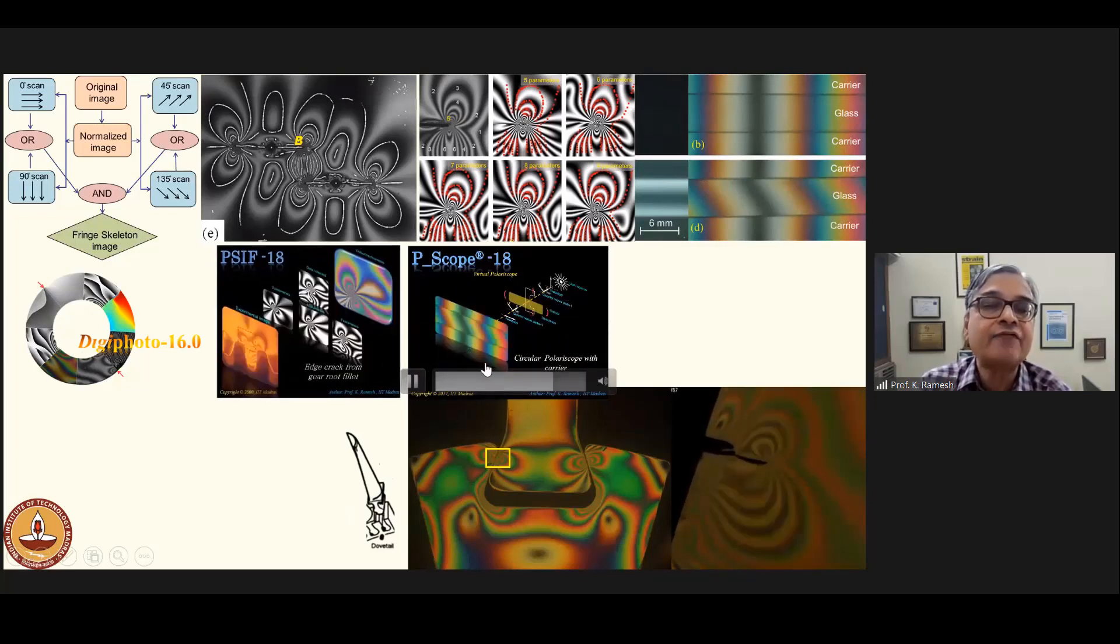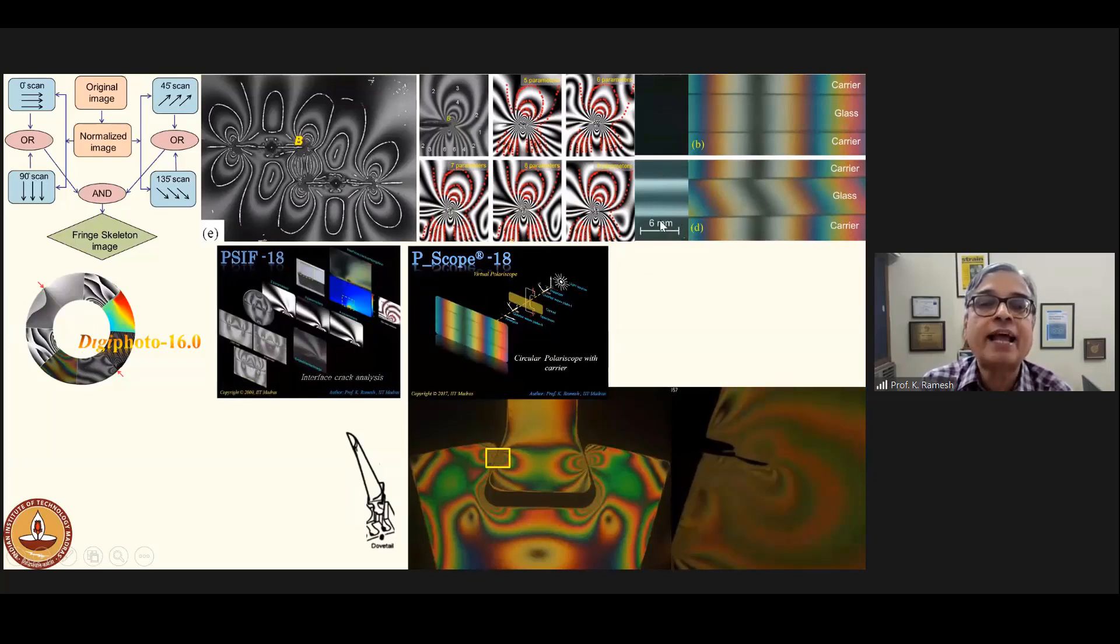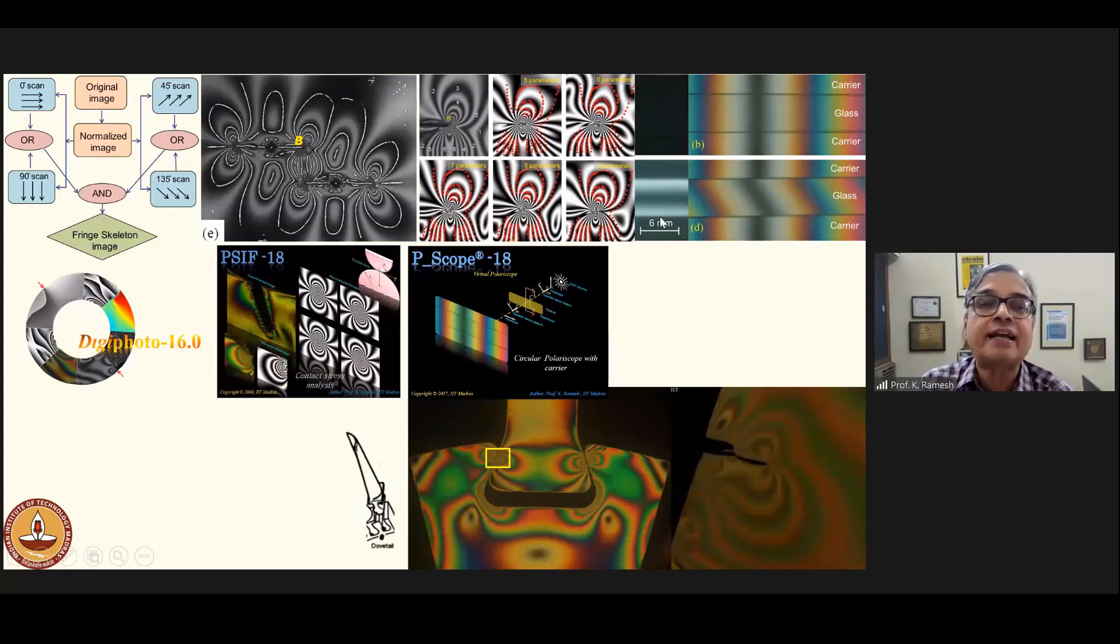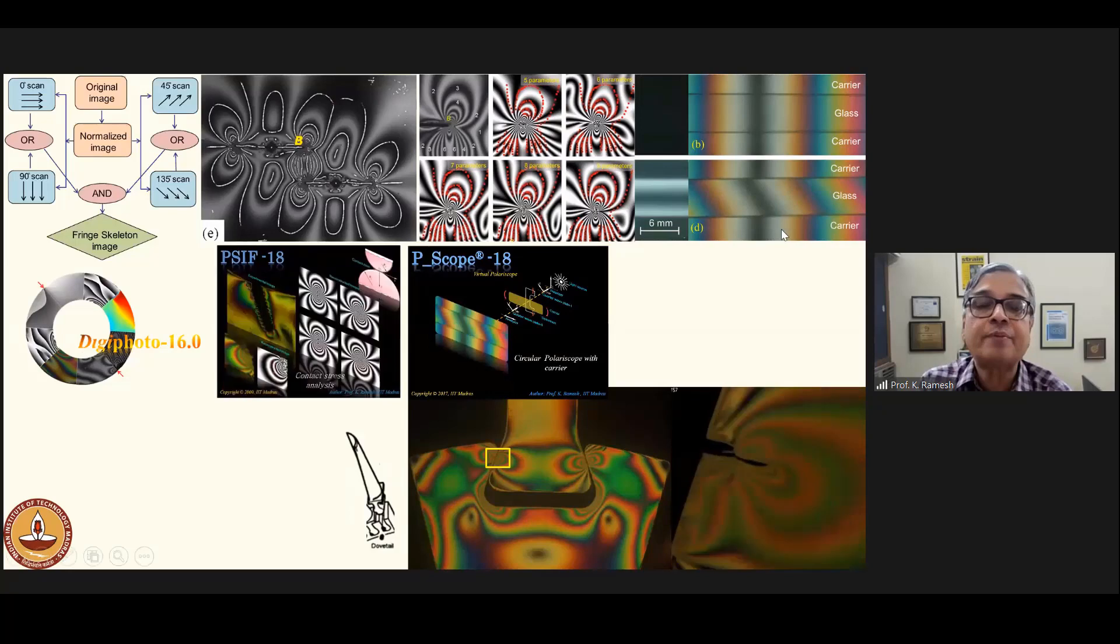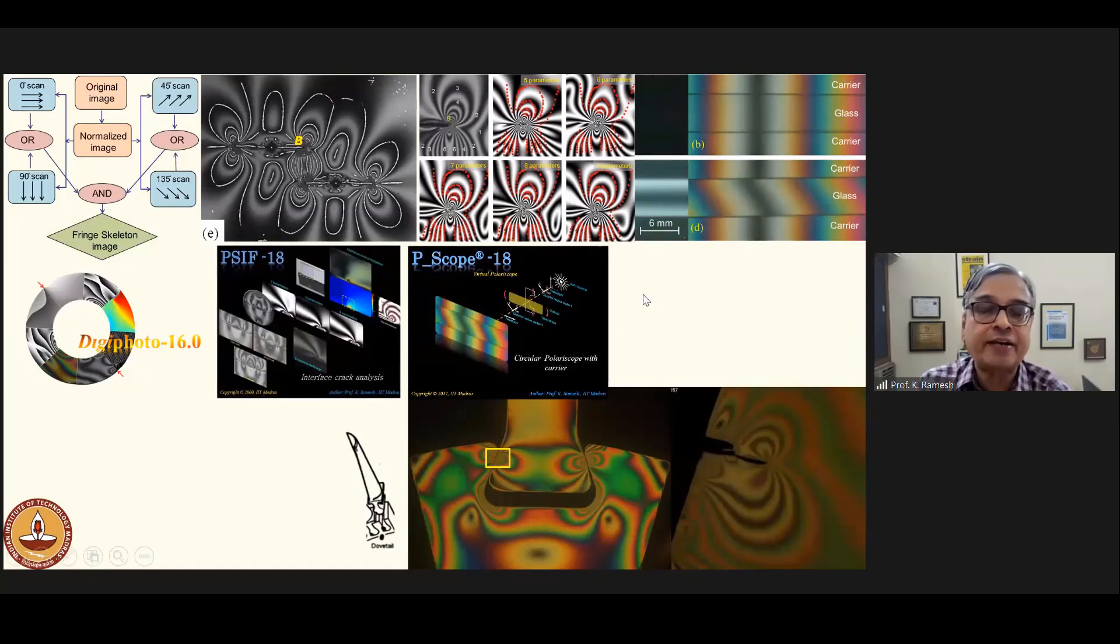One can also have carrier fringes in the simulation. Carrier fringes come in handy when you want to analyze a low birefringent material like glass. The carrier fringes augment the photoelastic information. You will be able to extract the data better.